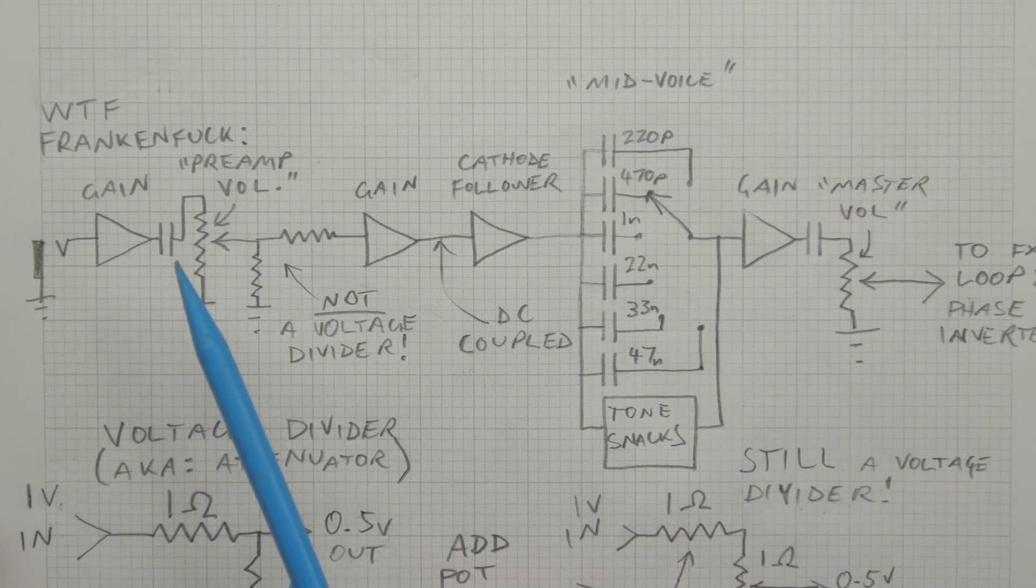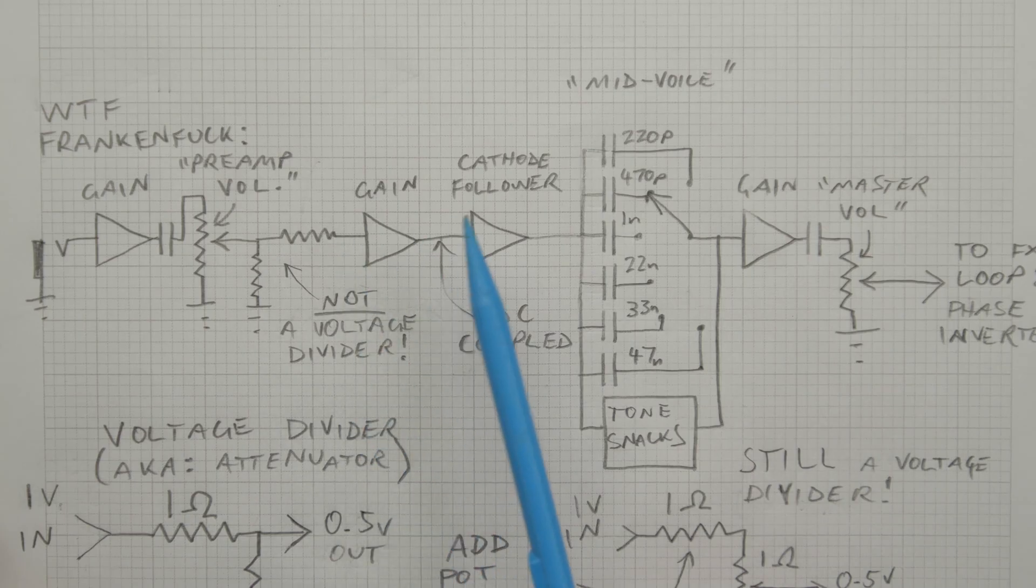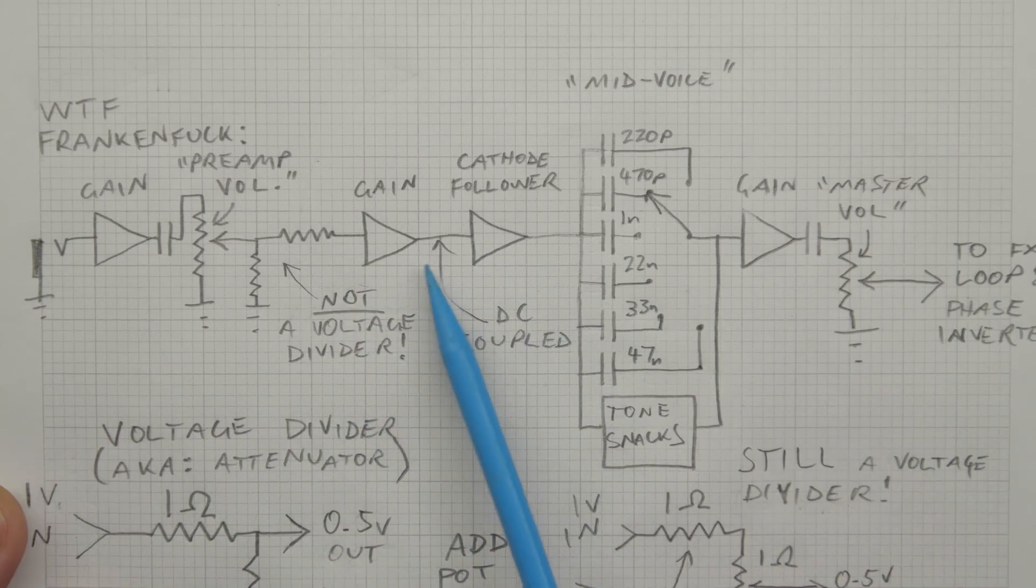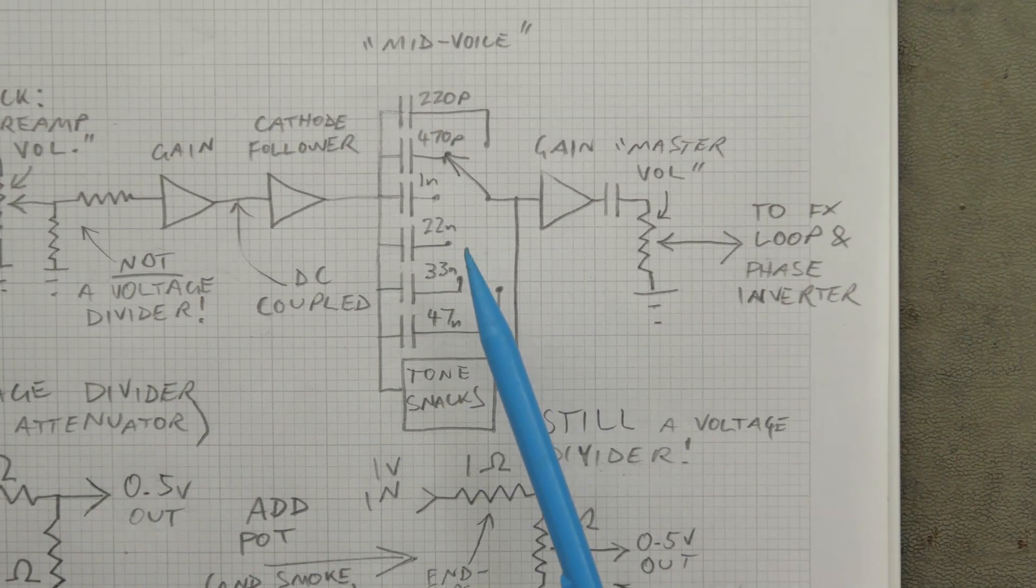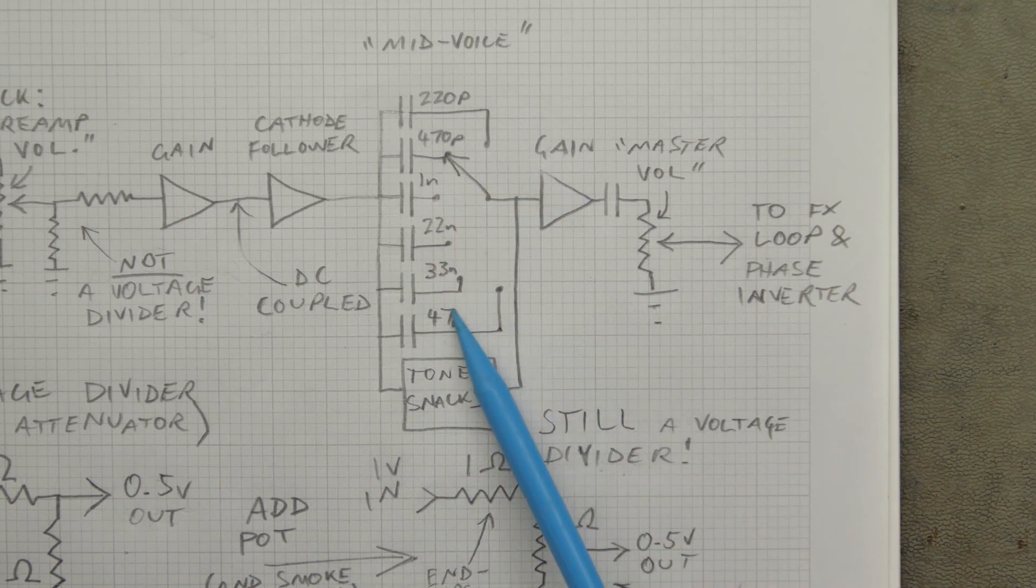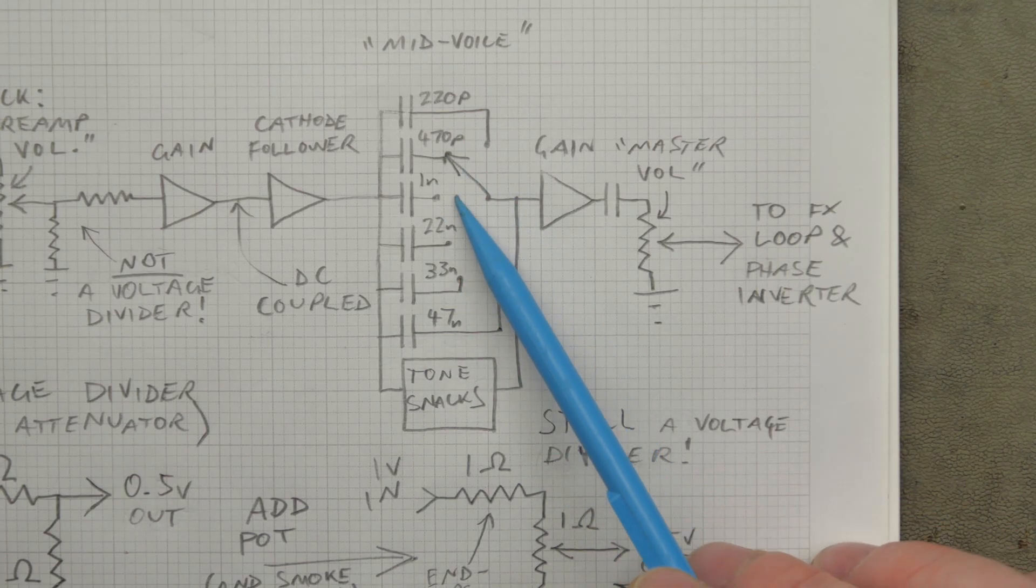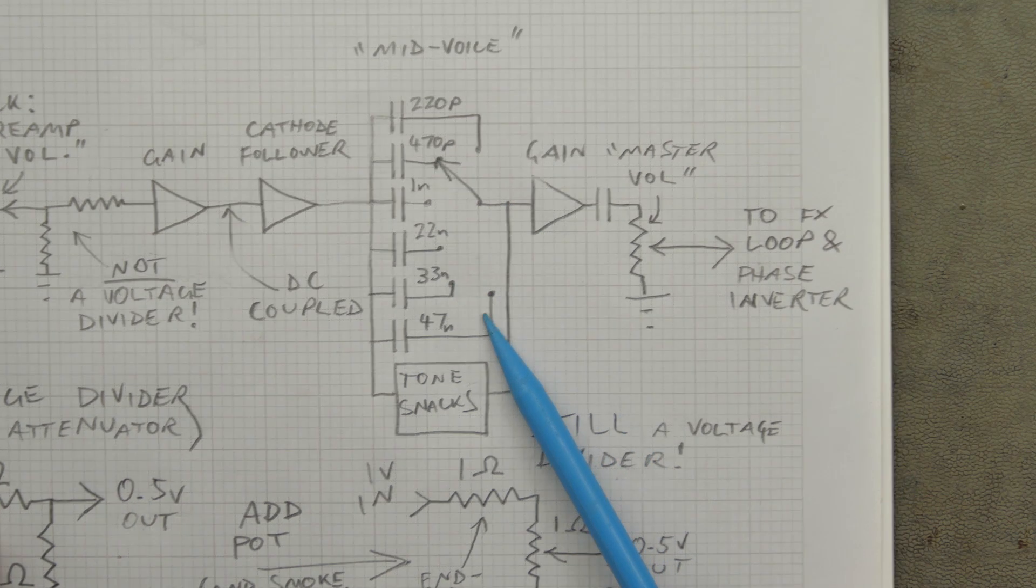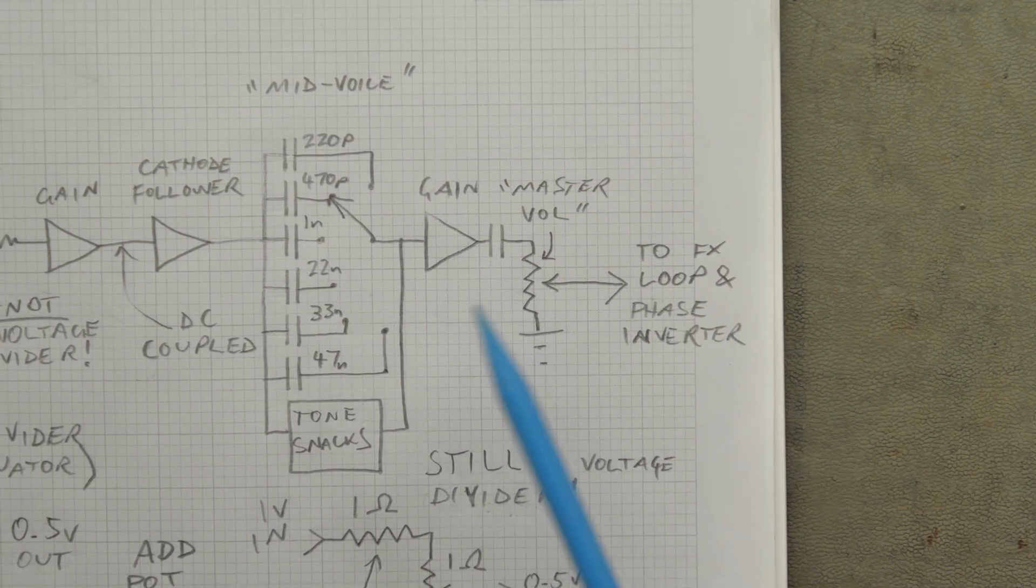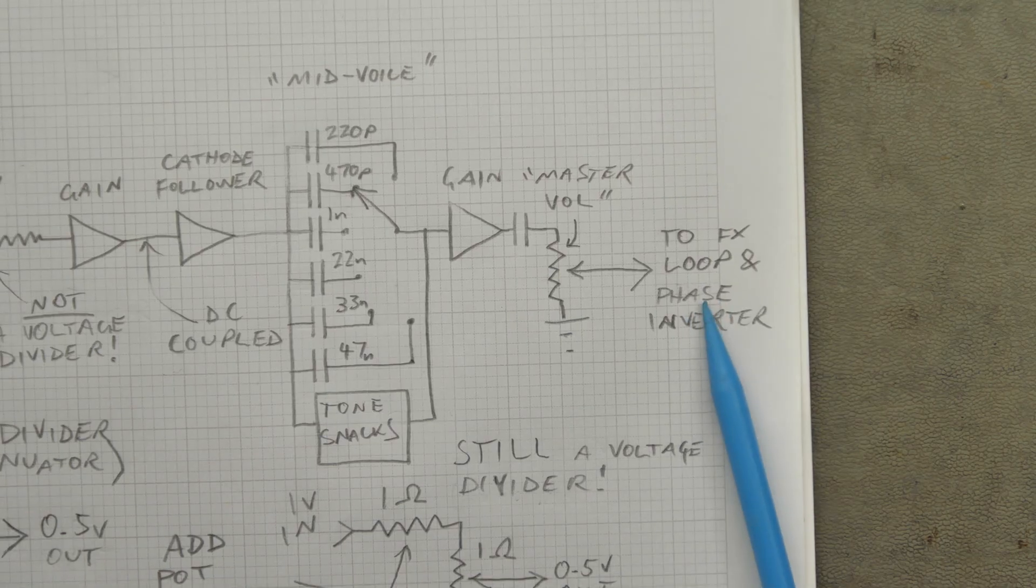So, you've got a gain stage, coupling cap, volume. Not a voltage divider. That's what we discussed before. Another gain stage, a cathode follower, DC coupled. And that's our tone stack down the bottom. And the mid-voice switch, which is basically the treble cap with these are the values that were the options on the switch as it came in. Then that extra gain stage. And then your master volume to effect loop and phase inverter. So, that's the topology as it came in.